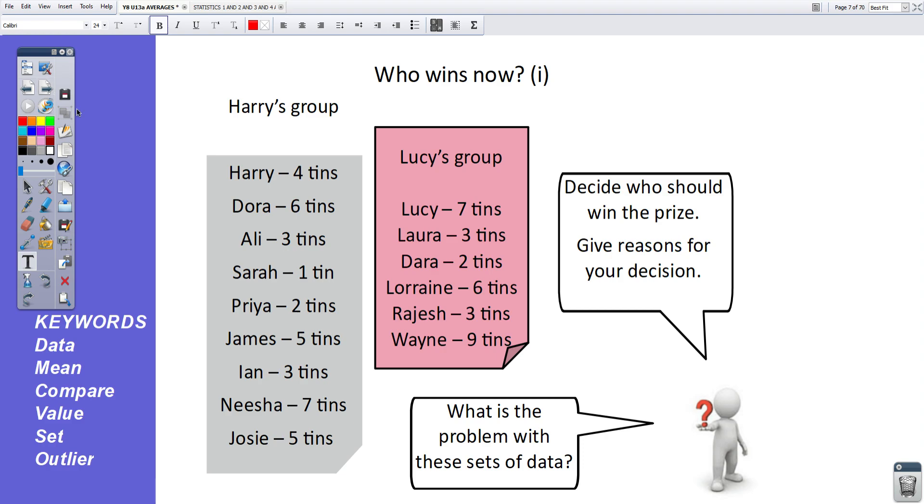However, if we look at Helen's group, we've got two people who've collected 10 tins. Whereas in Lenny's group, there's only one person who's collected 12 tins. So we've got more people here who've collected more tins. But then in Lenny's group, everybody has collected at least seven tins. Whereas in Helen's group, Emily only collected four tins. I think on this basis, we'd have to award the prize to Lenny's group for winning for collecting the higher total.